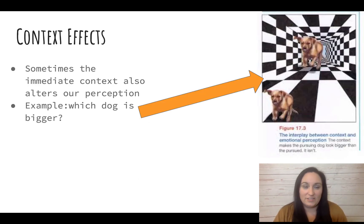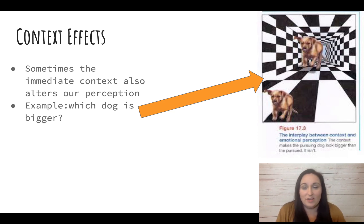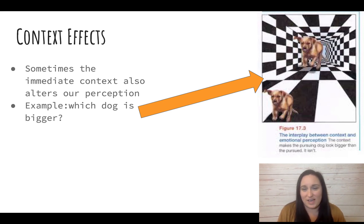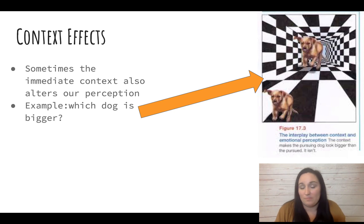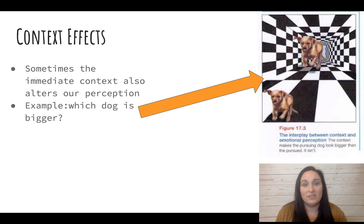Context effects: sometimes the context influences our perception. In this picture you might think the dog at the top is bigger, but they're the same dog and the same size — it's just what's around the image that makes it look bigger. Think of two really tall people: one is six foot three and the other is seven foot. The six-foot-three person might look a lot shorter, but that's just in comparison to the seven-foot person.